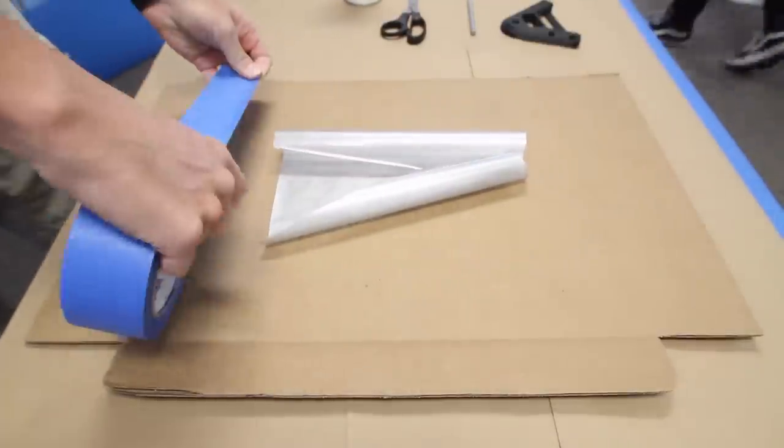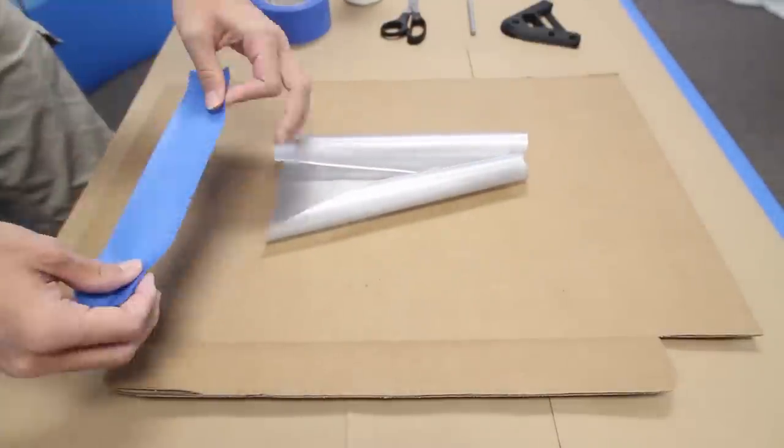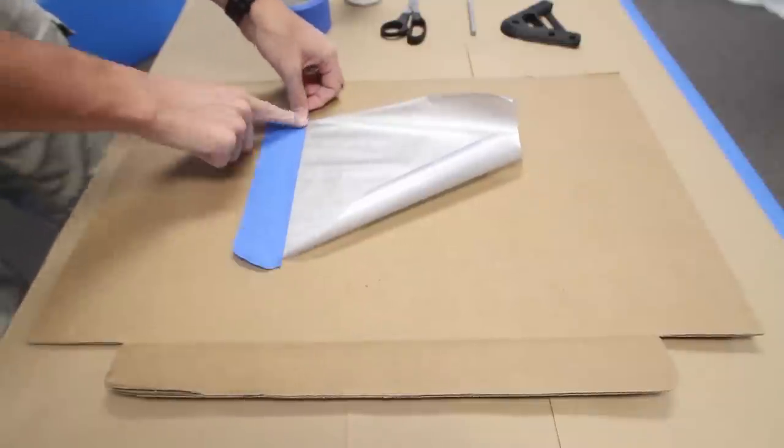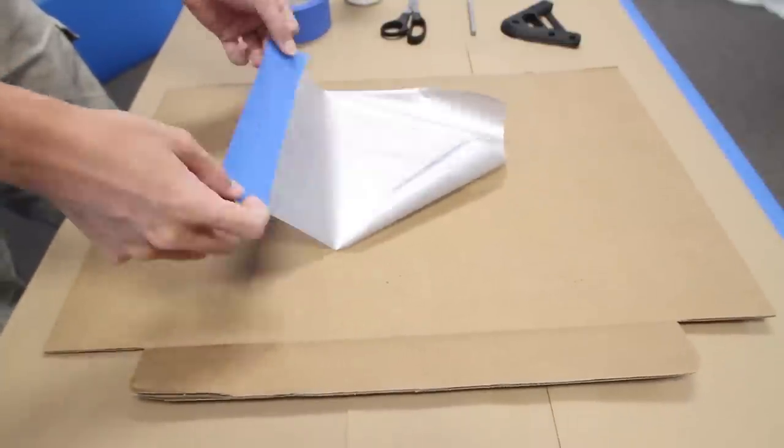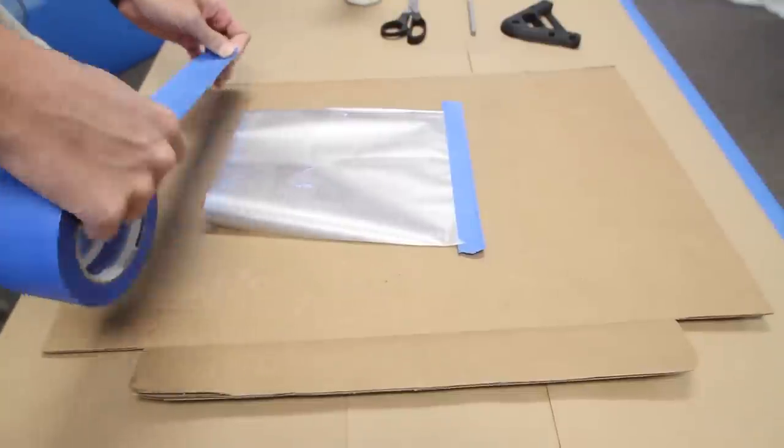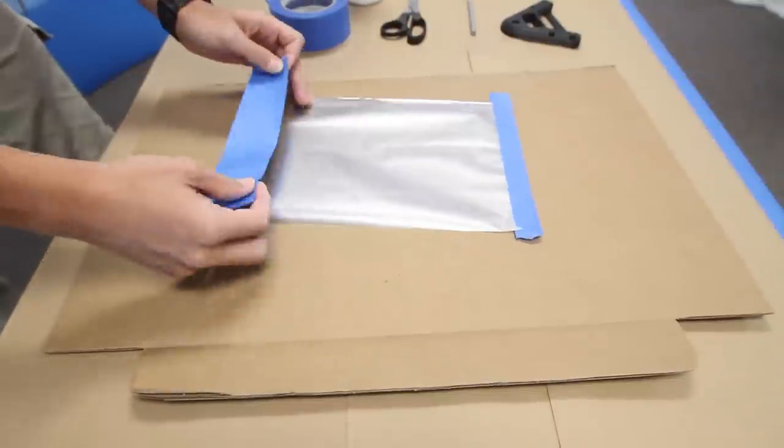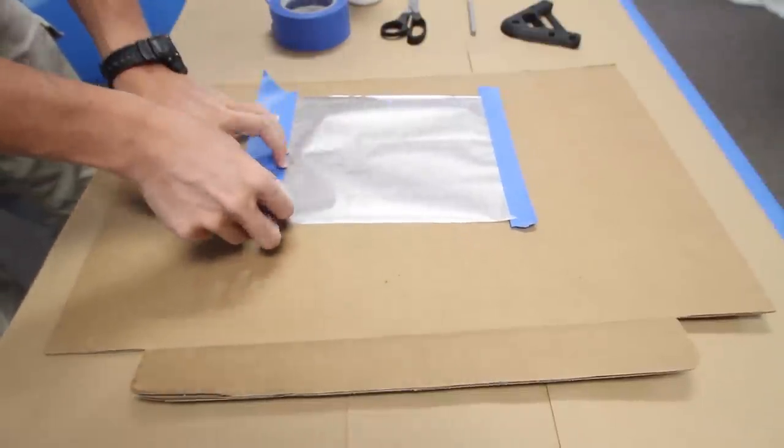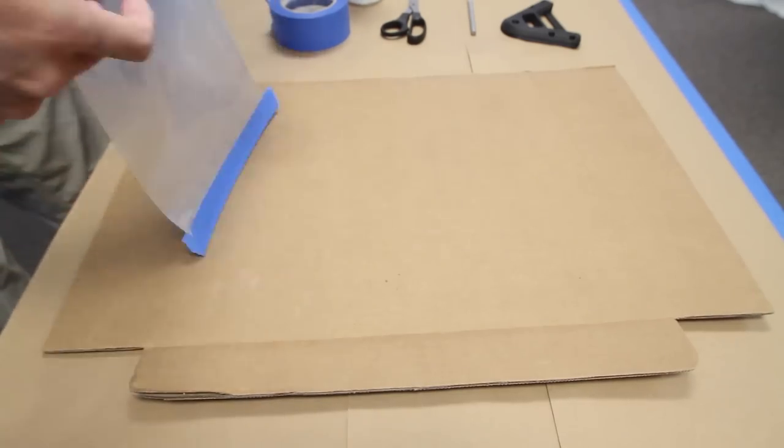Then we're going to take some blue tape and put it on the edges of the film. This is just to hold the film out flat while it's floating in the water and keep it from wrinkling up. You can cut off any excess if there is any.